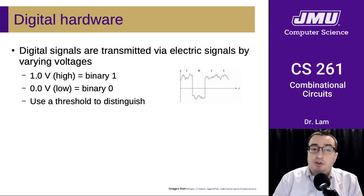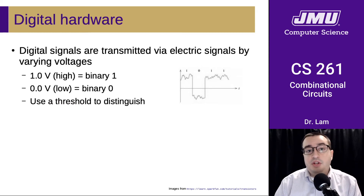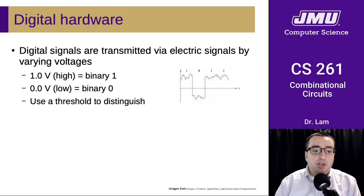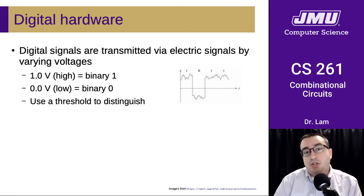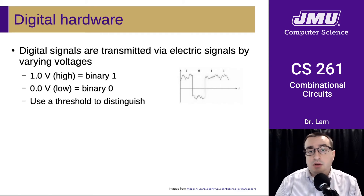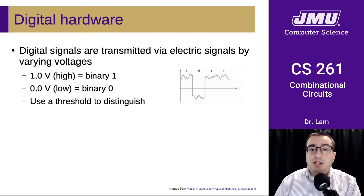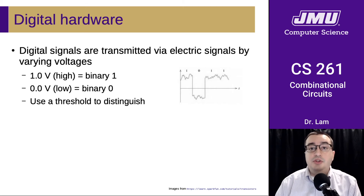This is how it works at the lowest level. We do this with digital signals transmitted via electrical signals, just by varying the voltage — a high voltage indicates a one and a low voltage indicates a zero, and we use a threshold to distinguish them. Incidentally, this is another reason why digital computers are mostly binary: it's a lot cleaner and more resistant to errors if we're only trying to distinguish between two values rather than three, four, or however many others.